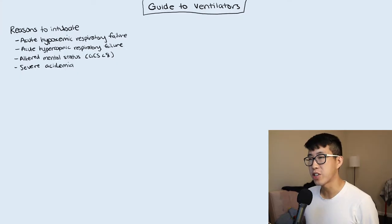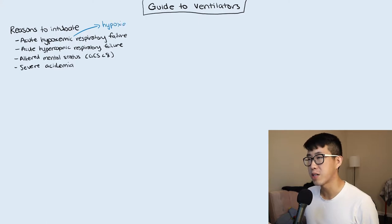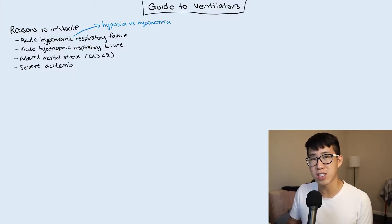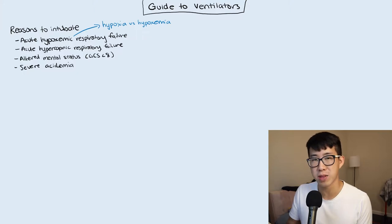For acute hypoxemic respiratory failure, people will often ask about hypoxia versus hypoxemia. Hypoxemia describes a low oxygen content in the blood, whereas hypoxia means you're starting to have poor perfusion to tissues and end organ damage from that low oxygen content. Hypoxia is worse than hypoxemia. A COPD patient with an oxygen saturation of 88% would be called hypoxemic but not hypoxic unless they were showing signs of poor tissue perfusion.